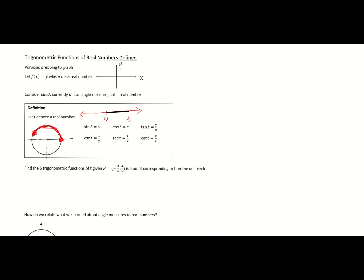Because we're in the rectangular coordinate system, wherever t ends up on the circle there is a point with coordinates (x, y) — it could be anywhere on the circle. Now this circle is a very special type: it's called a unit circle. A unit circle is easily defined — it is a circle that has radius one. No matter where you go from the center, the distance to any point on the circle is one.